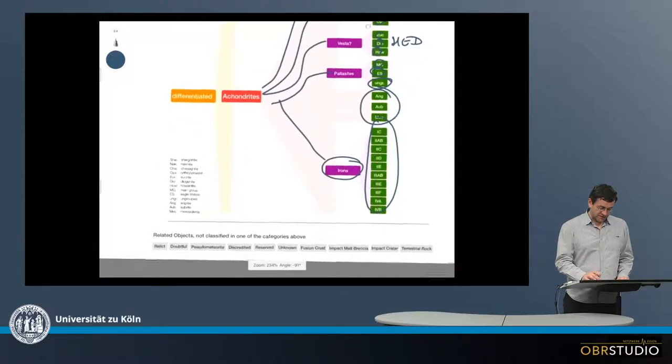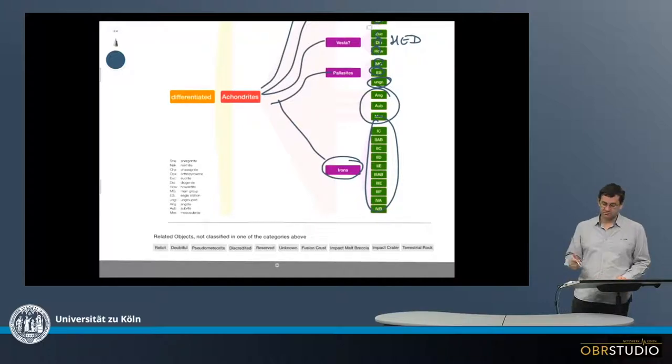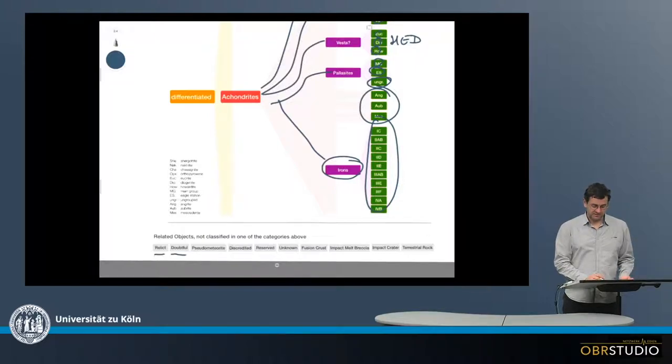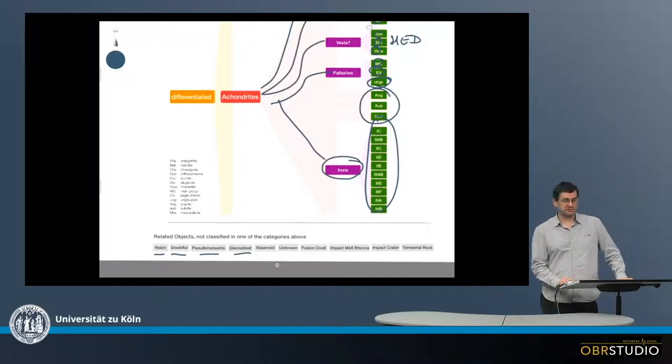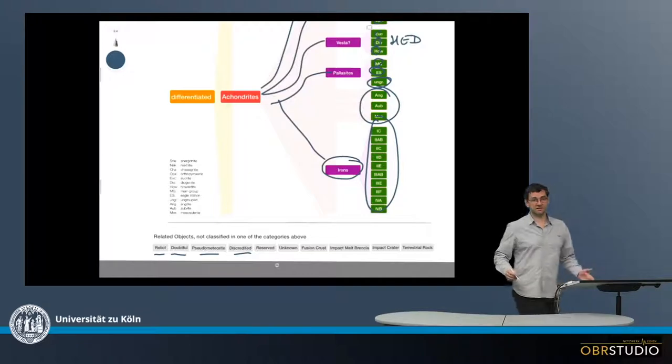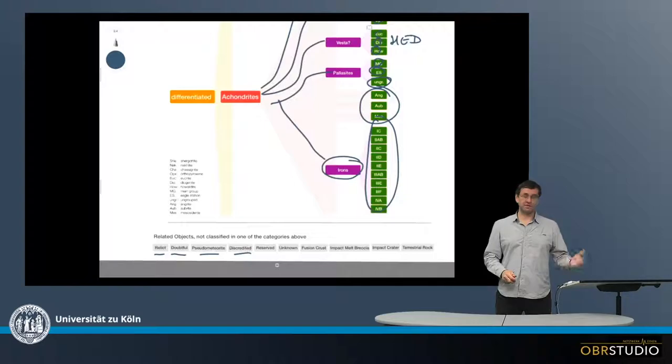And then in the end, there are related objects which you can find at the Meteoritical Bulletin or something like this, like maybe it's doubtful, or some relict material, pseudometeorites, something that's no longer regarded as a meteorite, and so on. These are some not meteorite classifications, but this is something that was maybe initially thought might be a meteorite or has some relation to meteorites. So this is the classic, traditional way of classifying meteorites, which is widely used and highly useful.